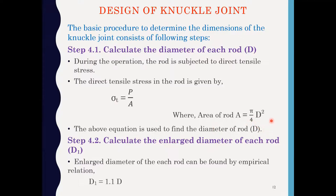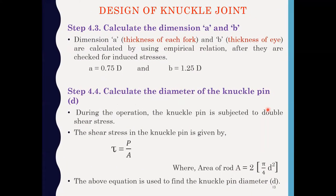Step 4.2: calculate the enlarged diameter of each rod. The enlarged diameter of rod is calculated by the empirical formula D1 = 1.1D. Step 4.3: calculate the dimensions A and B. Dimension A is the thickness of each fork and dimension B is the thickness of the single eye. These are also found using empirical formulas: A = 0.75D and B = 1.25D.